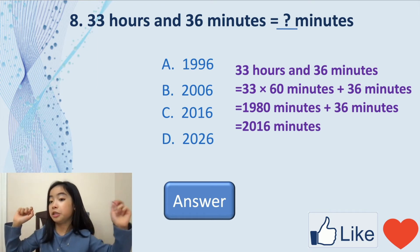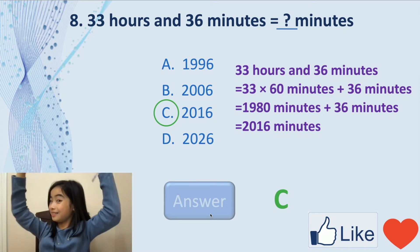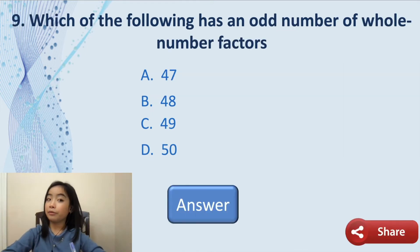We have 33 hours and 36 minutes equals how many minutes? We know that there are 60 minutes in 1 hour. So 33 times 60 minutes plus 36 minutes equals 1,980 minutes plus 36 minutes. That equals 2,016 minutes. Now we circle C, and we press the answer button. And we are correct.